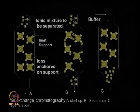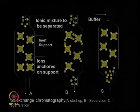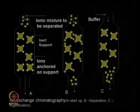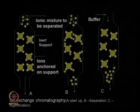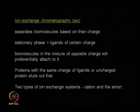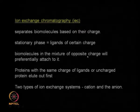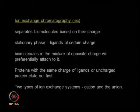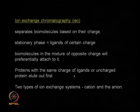Then you can go into purifying the protein of interest. Ion exchange chromatography is based on the concept of separation of ions — either ions of interest can be concentrated, or ions of no interest can be captured. The stationary phase will have ligands of a certain charge, so biomolecules of opposite charge will preferentially attach to it, while proteins or molecules with the same charge — as well as uncharged proteins — will elute out first.